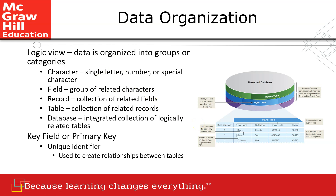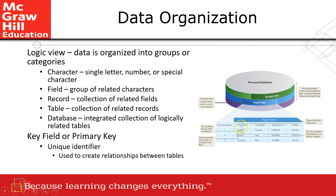Remember this from the Access database labs that students work on in SimNet and the handouts provided through Blackboard. This is just a brief explanation about the theory of databases in Access. A character — for example 'Brown' — is a single letter, number, or special character. A field is a group of related characters. 'Last Name' is a field name; 'First Name' is another field name.